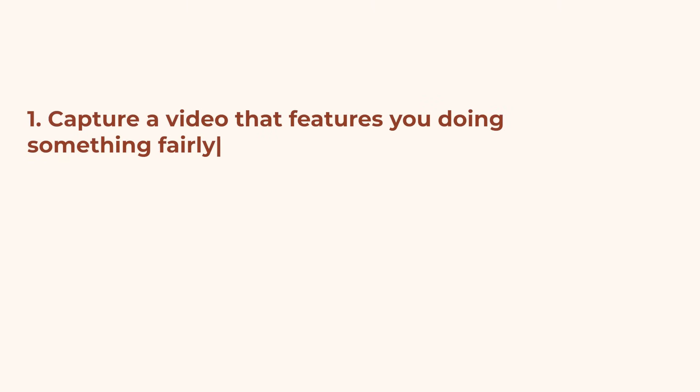When you reach a lot of people with your social media content you increase the chances of you growing. So how do we go about making this magical short form video that reaches a lot of people? Well the first thing you want to do is capture a video that features you doing something fairly monotonous. For example I often film myself whilst I'm working so you can see me but I'm not doing anything that's too wild or too distracting. Another example is you walking towards the camera or walking away from the camera — something which isn't too wild and distracting but features your face in it.